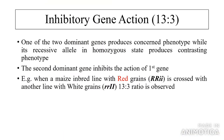Inhibitory gene action: 13:3. One of the two dominant genes produces the concerned phenotype while its recessive allele in homozygous state produces the contrasting phenotype; the second dominant gene inhibits the action of the first gene. Example: when a maize line with red grain is crossed with another line with white grain, a 13:3 ratio is observed.